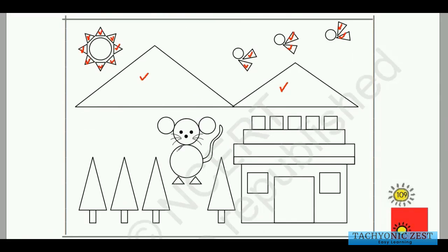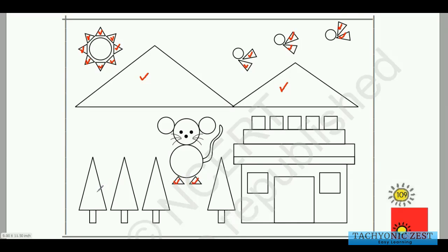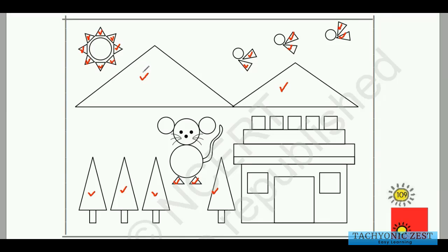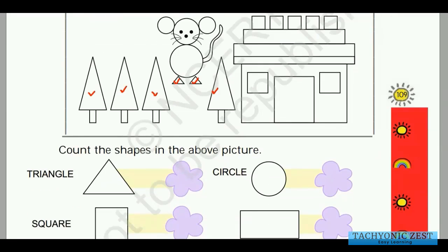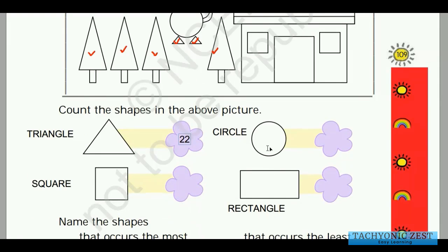Are we done? No — the mouse's legs are in the shape of a triangle, so we tick-mark those also. These trees are again triangles, so let us tick-mark them too. Now let us count the total number of triangles: one, two, three, four, five, six, seven, eight, nine, ten, eleven, twelve, thirteen, fourteen, fifteen, sixteen, seventeen, eighteen, nineteen, twenty, twenty-one, twenty-two. We got a total of 22 triangles.